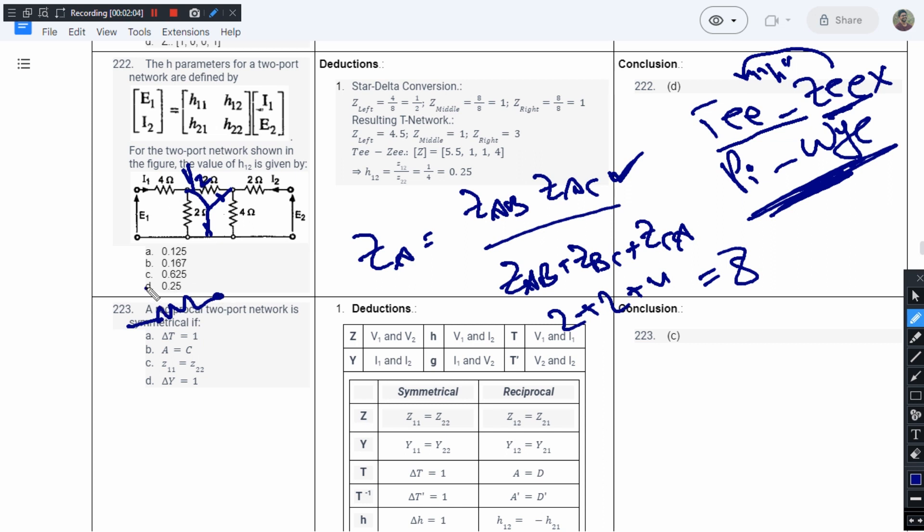Here we have 4 plus 1/2, which equals 4.5. Here we have a 1 and a 2. Here we have the parallel combination. So it's going to be... no, this is not the parallel combination. This is the conversion.